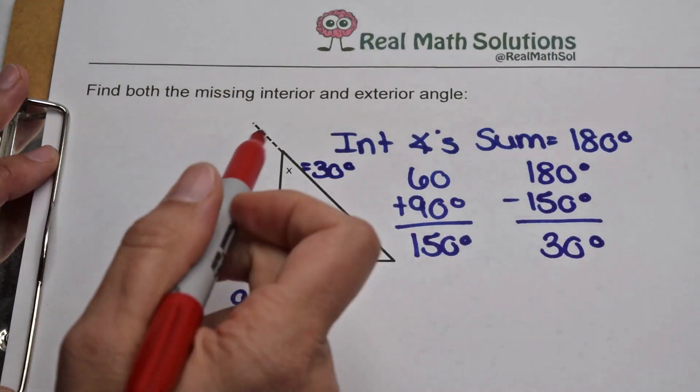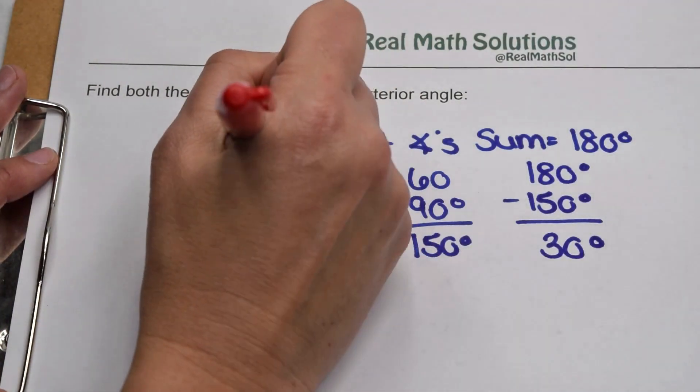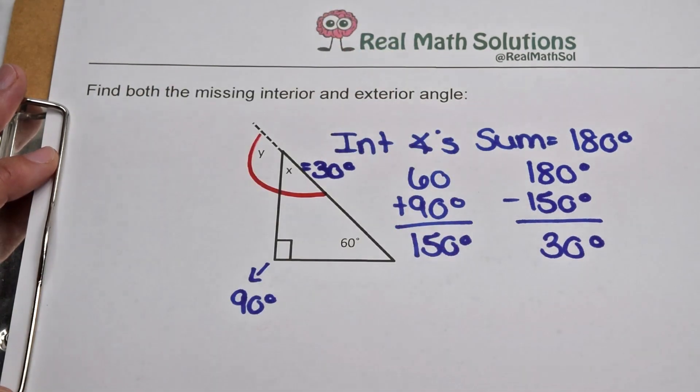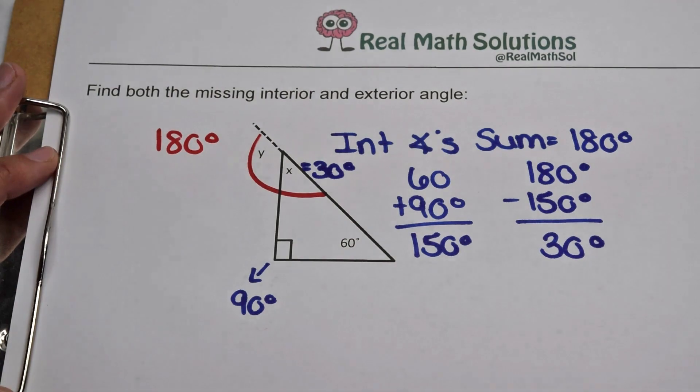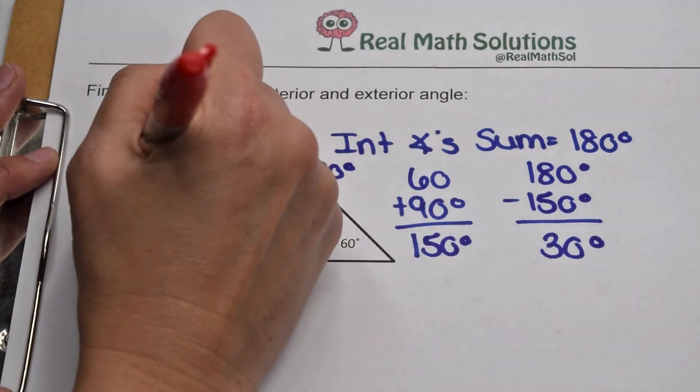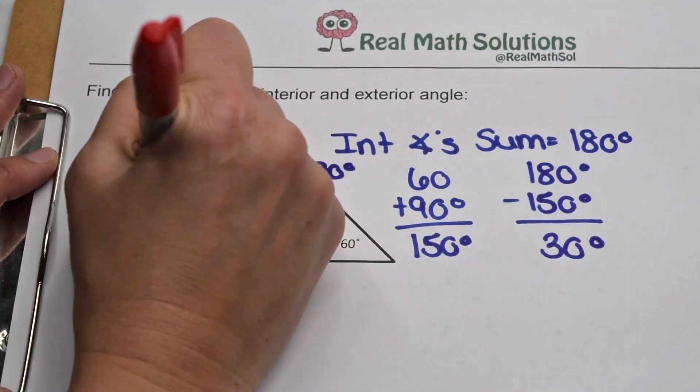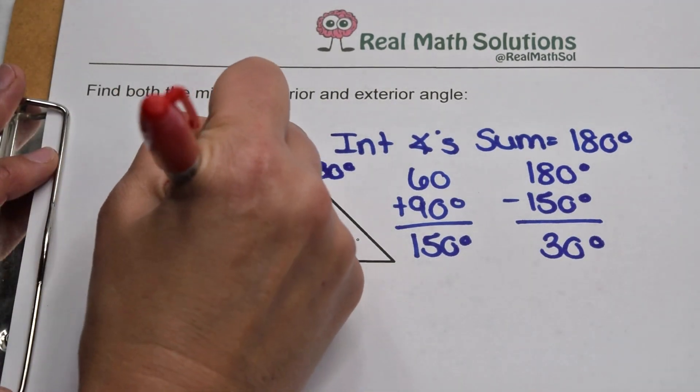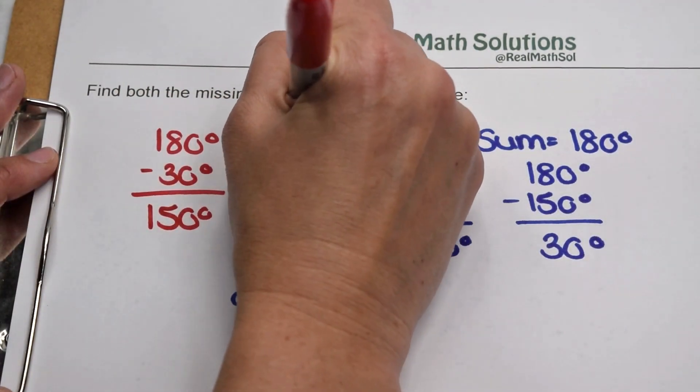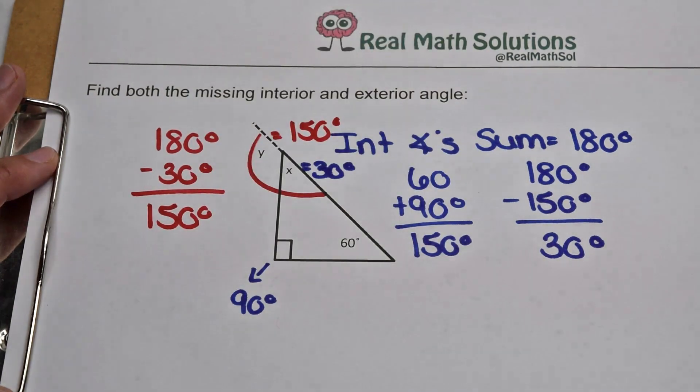Now we can find our missing exterior angle y. Our exterior angle is always supplementary to our interior angle, meaning together they form a straight line and add up to 180. We already know that the interior angle is 30, so to find the exterior angle we can do 180 minus 30. When we do that, that gives us 150. So y is going to be worth 150 degrees.